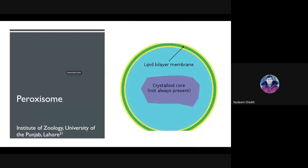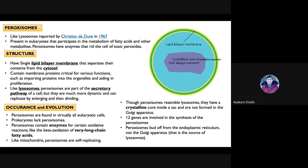The topic is peroxisomes. As the name indicates, they are related to peroxides and are somehow related to lysosomes because they are also part of the cellular secretory pathways. Peroxisomes were first reported by Christian de Duve, the same scientist who reported lysosomes, and they are found in eukaryotic cells.